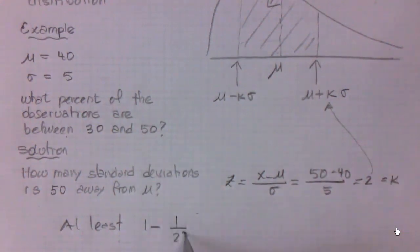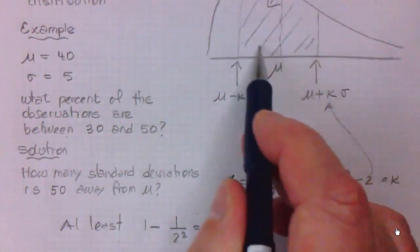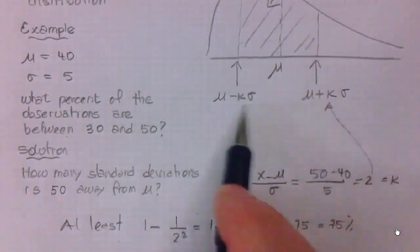will be at least 1 minus 1 over k squared, where k is 2. This gives you 1 minus 1/4, which is 3/4, or 0.75, which is 75%. So we expect at least 75% of the observations between two standard deviations up and down from the mean.